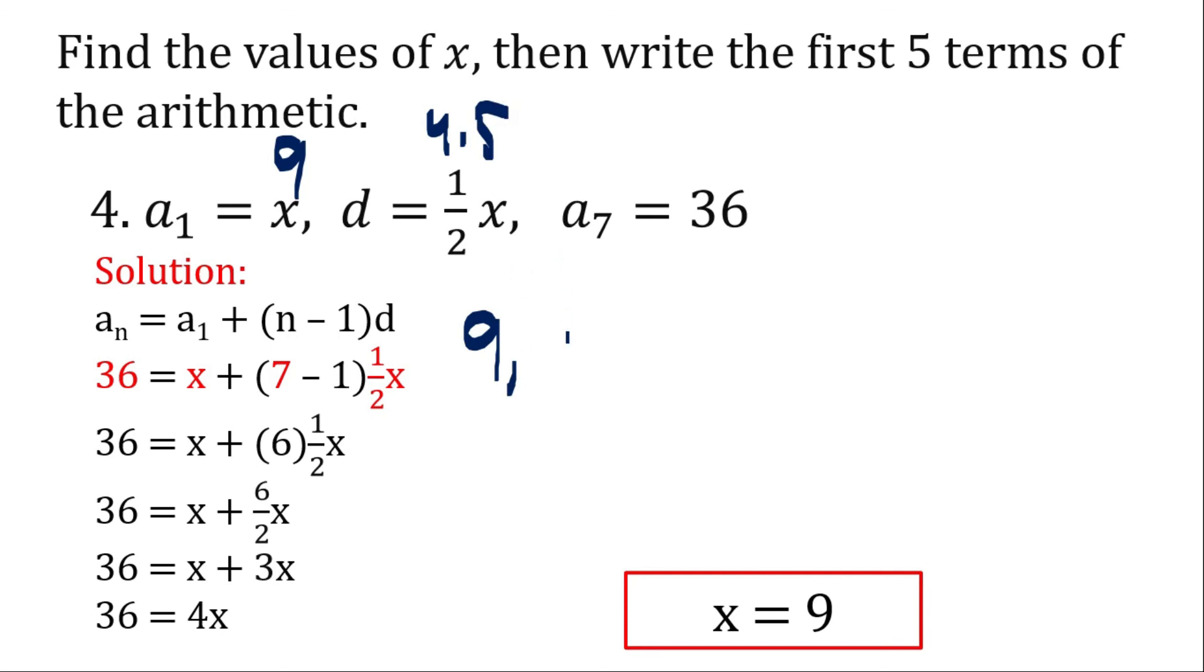Plus 4.5, that will be 13.5. Plus 4.5, that is 18. Plus 4.5, that would be 22.5. Plus 4.5, that would be 27. So these are our first five terms.